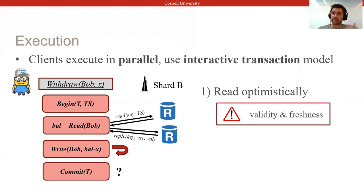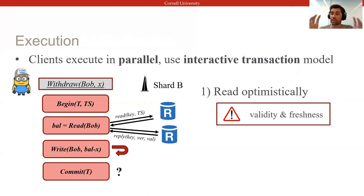In Basel, reads are sent to local replicas, but importantly, since these replicas could be Byzantine, clients need to make sure that the values are valid and that they're not tricked into reading arbitrarily stale values. To guarantee this, correct clients in Basel make sure to read from at least one correct replica.